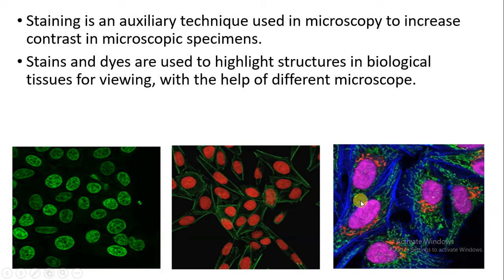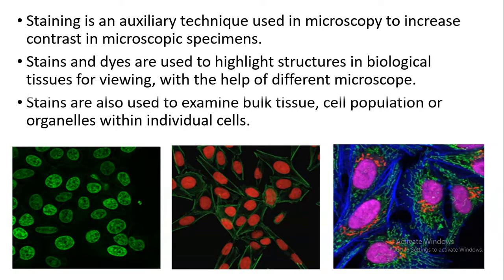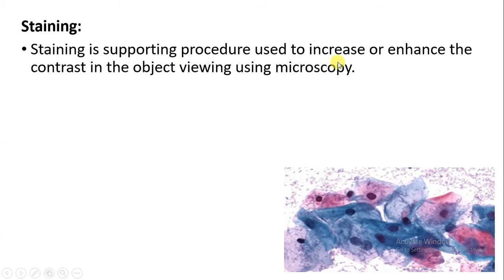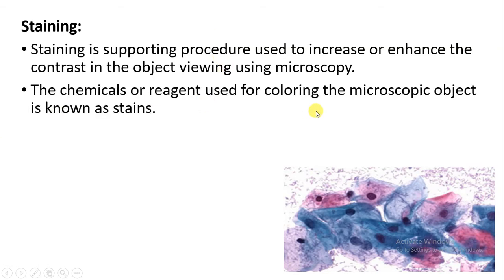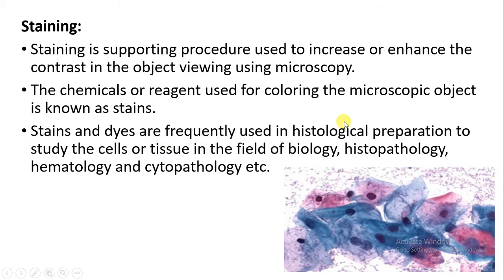Stains and dyes are used to highlight structures and to examine bulk tissue. Cell populations can also be seen using stains. We can also observe organelles like the mitochondria present inside the cell. Staining is a supporting procedure that enhances the contrast in the object being viewed using microscopy. Stains and dyes are frequently used in histological preparation — that study is called histology. They are also used in histopathology, hematology, and cytopathology.